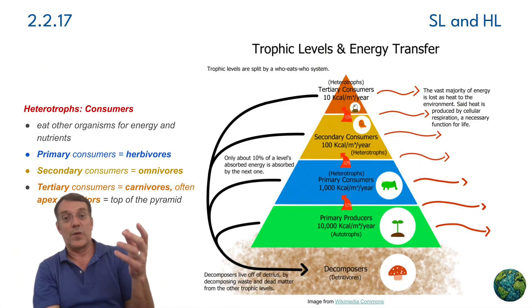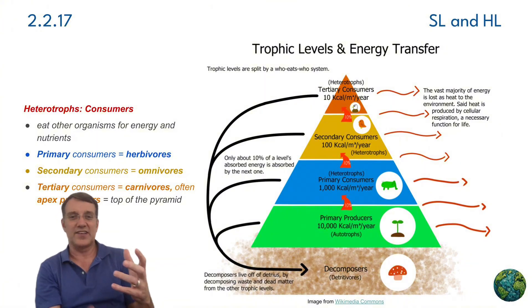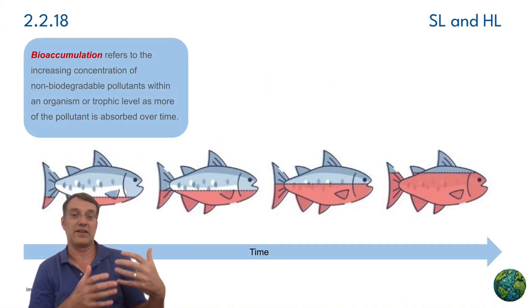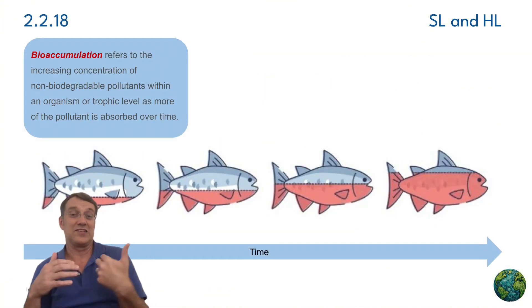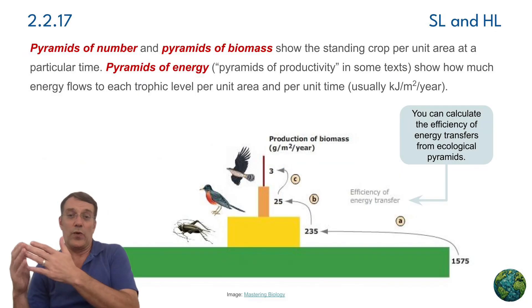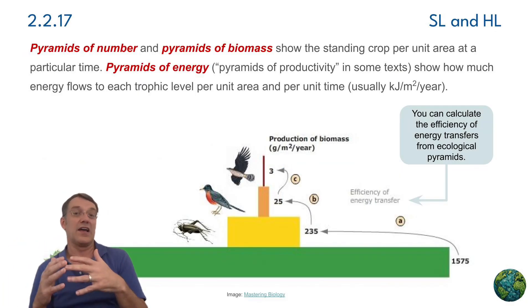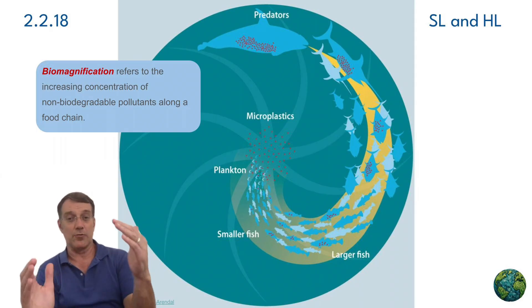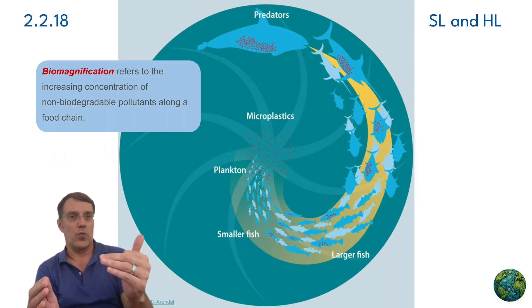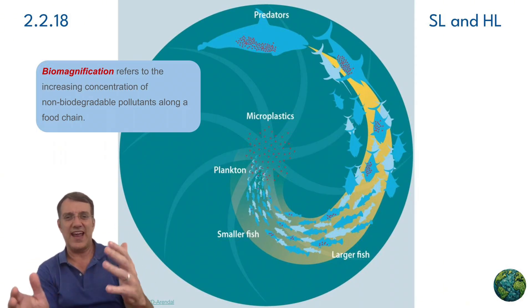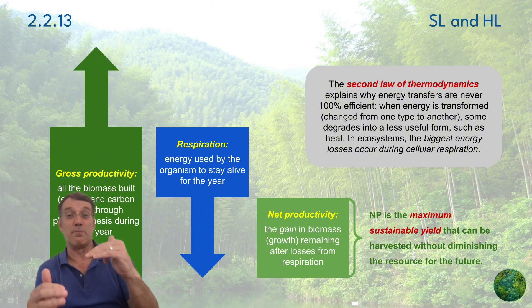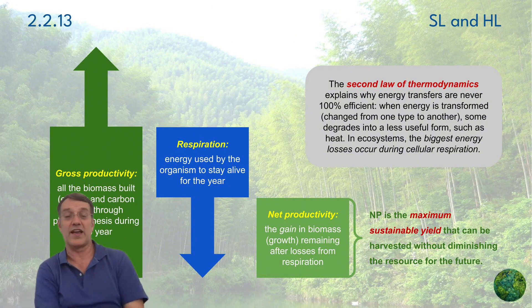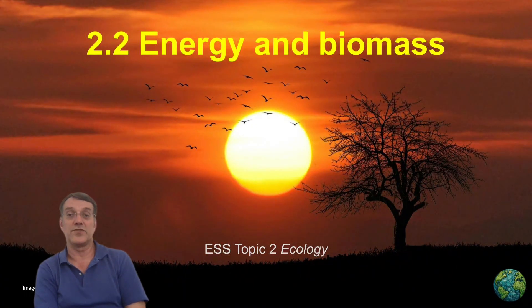When we understand these concepts, it helps us recognize how human actions affect ecosystem function and stability. When we study energy flow and trophic relationships, we can better manage our resources and work to maintain the ecological balance and processes that sustain life on our planet. That's it for Topic 2.2.